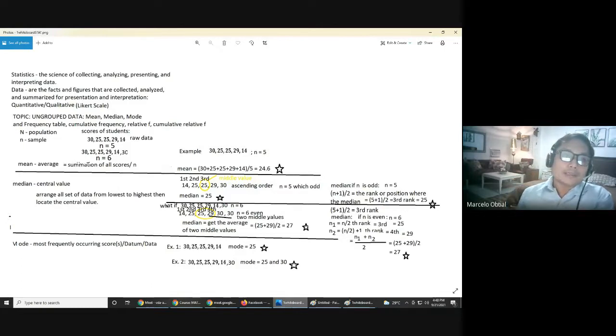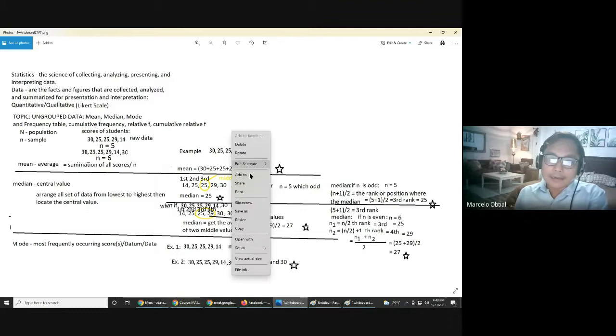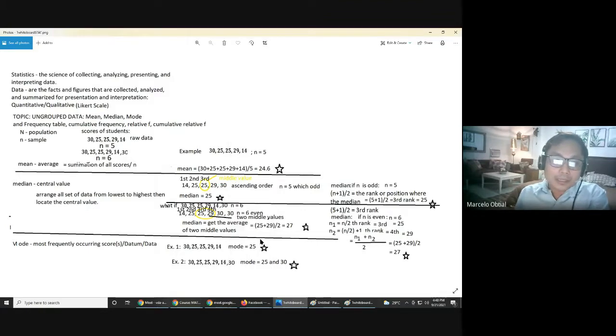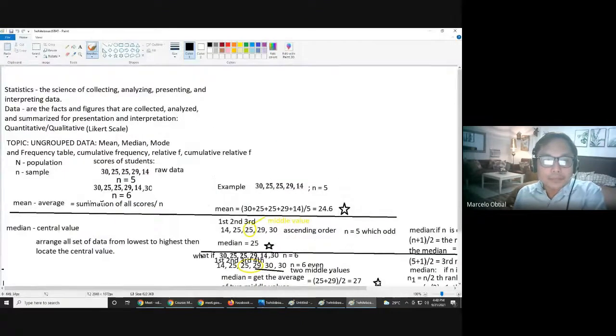But before that, let us review some terms that we use maybe during our high school. So the first term is all about statistics. Statistics, the science of collecting, analyzing, presenting, and interpreting data. So that's the meaning of statistics. The next term is data. Data are the facts and figures that are collected, analyzed, and summarized for presentation and interpretation.